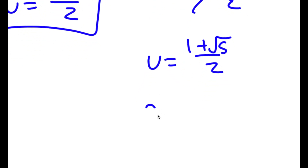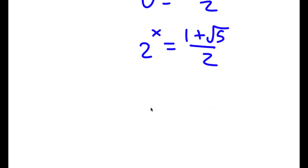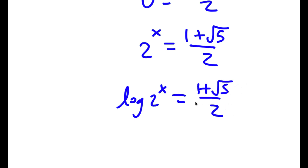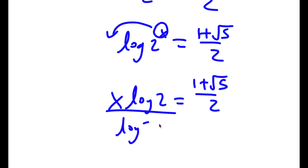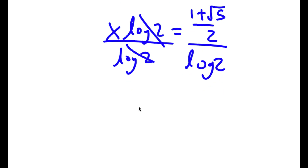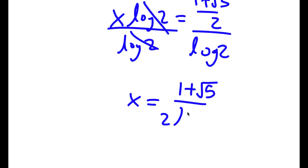Finally, u is equal to 1 plus the square root of 5 over 2. So I have 2 to the power of x is equal to 1 plus the square root of 5 over 2. Taking the log on both sides, I get log of 2 to the power of x equals log of 1 plus the square root of 5 over 2. Moving the exponent to the front, I get x times log 2 equals log of 1 plus the square root of 5 over 2. Dividing both sides by log 2, x is equal to log of (1 plus the square root of 5 over 2) divided by log 2.